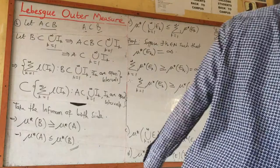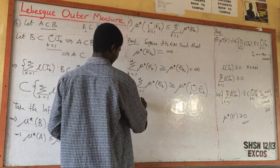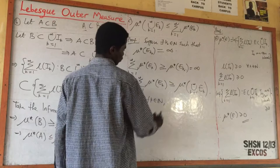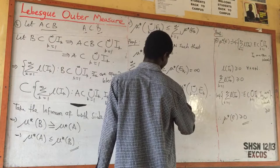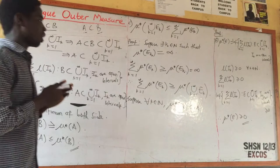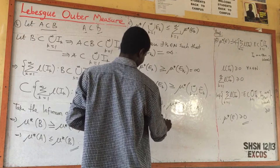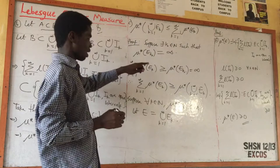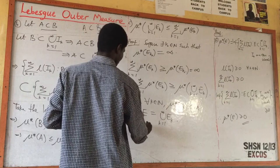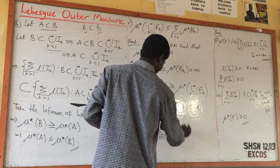Case 2: Suppose for all k, the outer measure of E_k is finite. Let E equal the union from k=1 to infinity of E_k. We want to prove that the outer measure of E is less than or equal to the summation from k=1 to infinity of the outer measure of E_k.